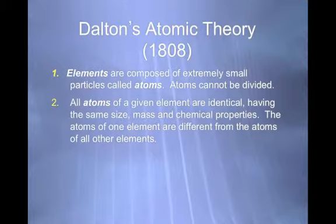All atoms of a given element are identical, having the same size, mass, and chemical properties. The atoms of one element are different from atoms of all other elements. Do you agree with that? No. Ions and isotopes. Isotopes have different numbers of neutrons. So they don't have the same size and mass. They have the same chemical properties, but not the same mass. So that one's just been modified a little bit.